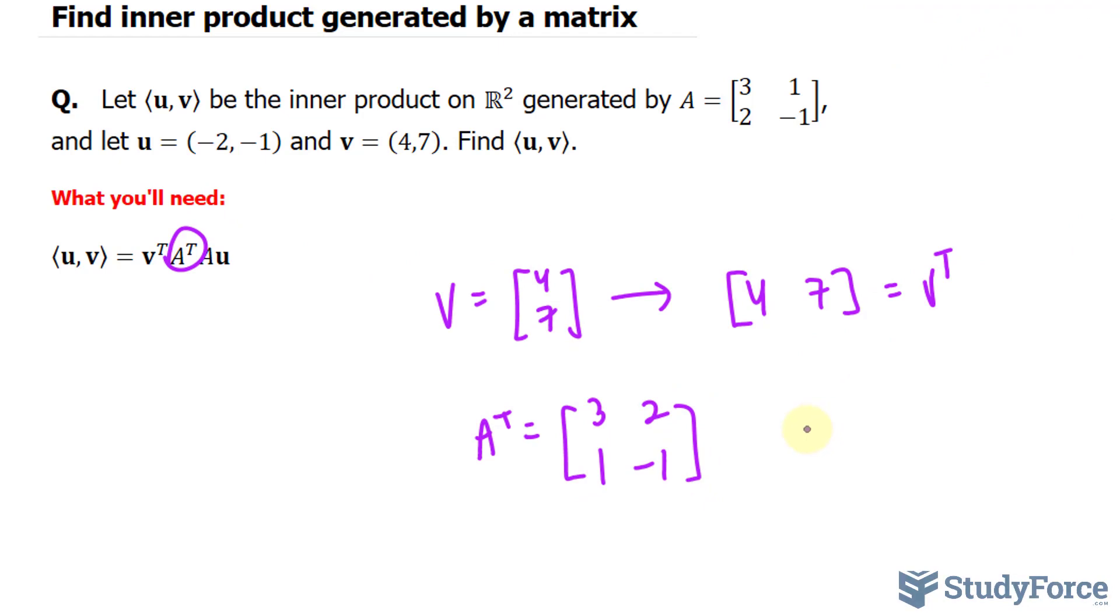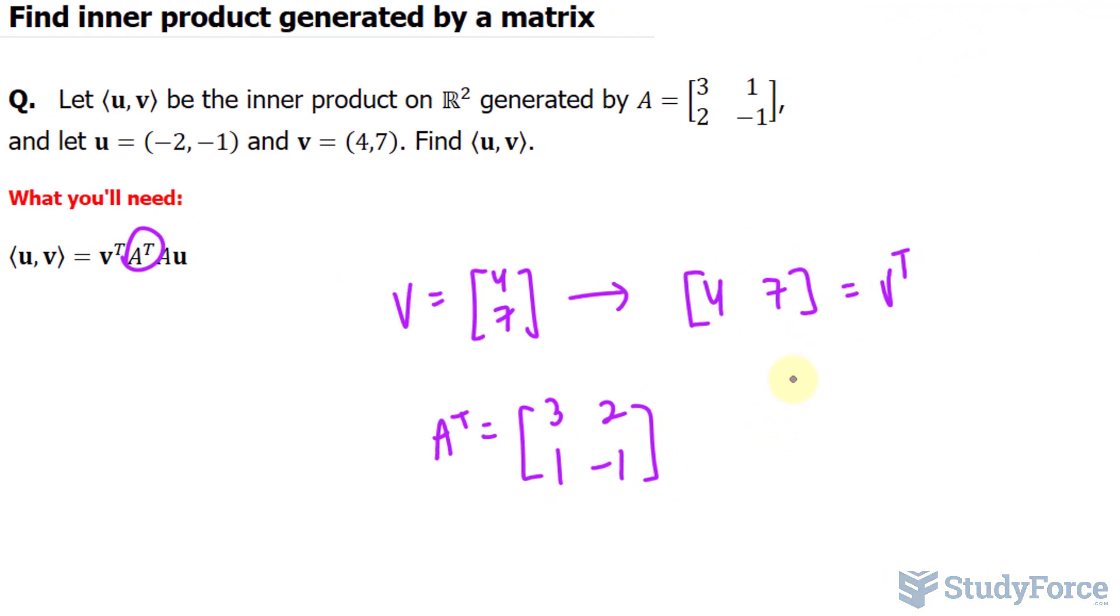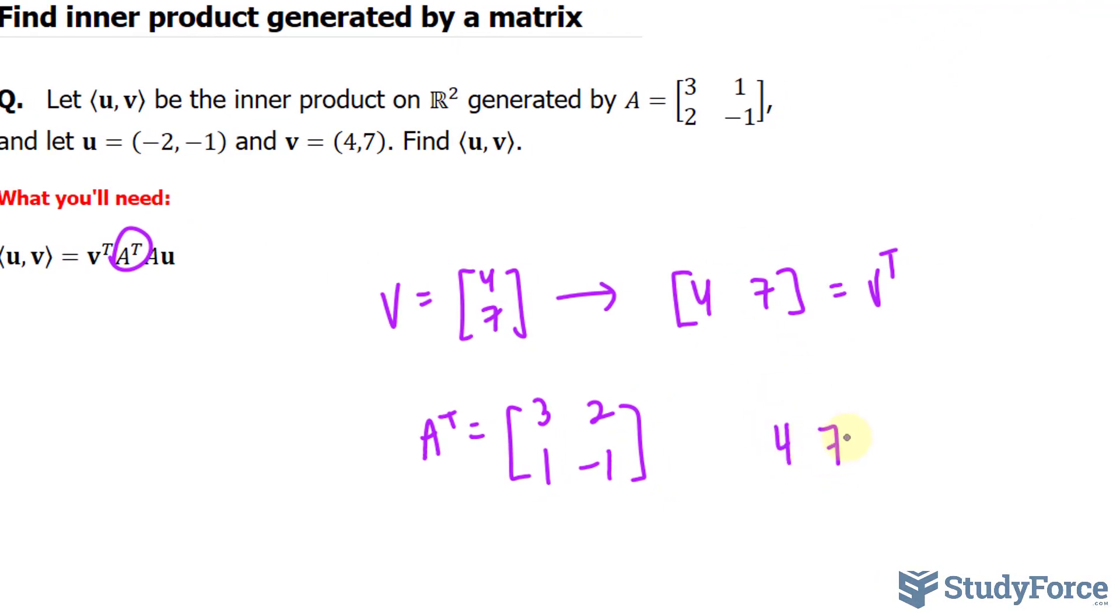So let's write this all down. We have the transpose of v times the transpose of A: 3, 2, 1, negative 1 times this matrix, multiplied by u, which was negative 2 and negative 1.